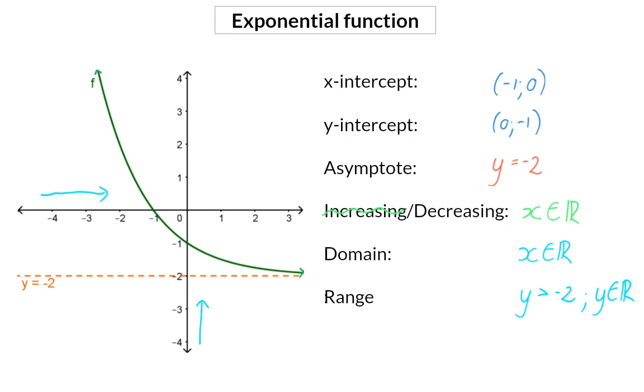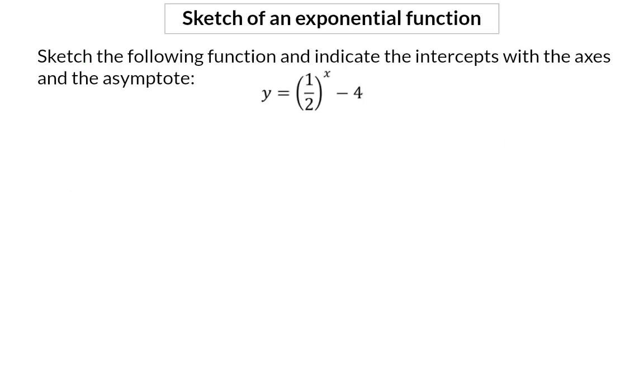Let's go and sketch an exponential function. Sketch the following function, and indicate the intercepts with the axes and asymptote. If I start off by getting a rough idea of the sketch, I will have a look at the q-value, which gives me my horizontal asymptote, at y is equal to minus 4.